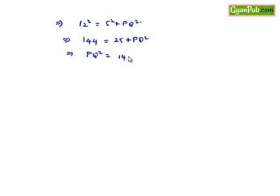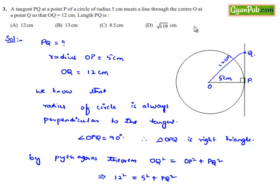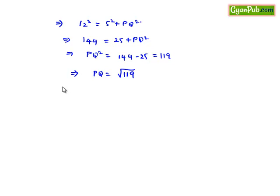That implies PQ is equal to square root of 119. If we observe the options, √119 centimeters is in option D, therefore option D is correct.